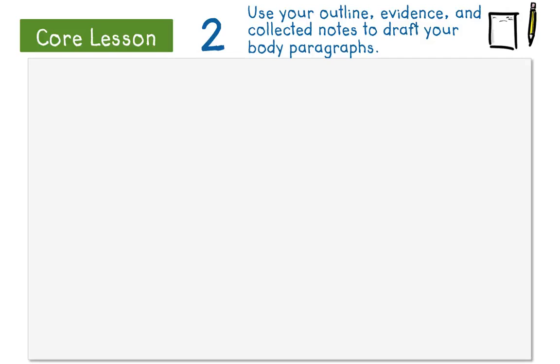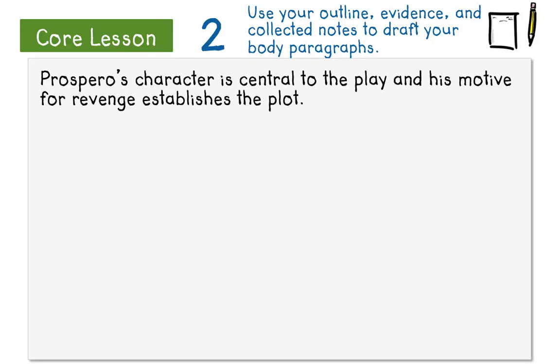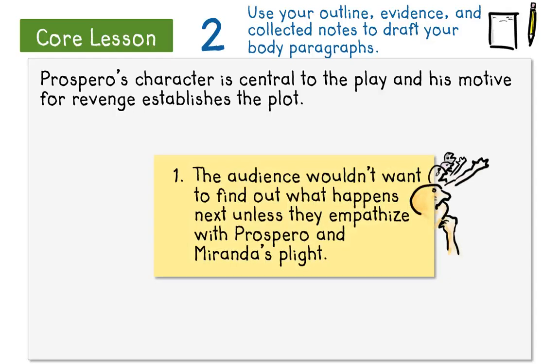I'll just start by writing the reason I have so far as it is: Prospero's character is central to the play and his motive for revenge establishes the plot. I'll probably need to rewrite this sentence later to make it fit in with the transition, but it will do for now. Let me refer to the note I made earlier about what I need to focus on here — I was reminding myself that I have to stress that the audience would want to find out about what happens next unless they empathize with Prospero.